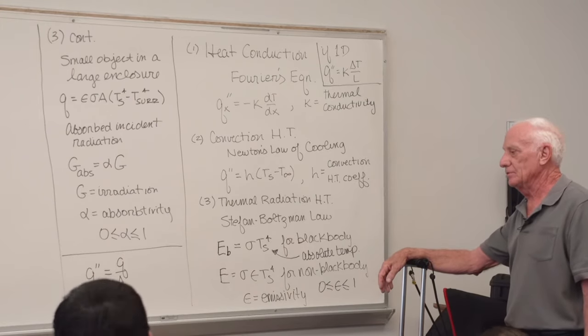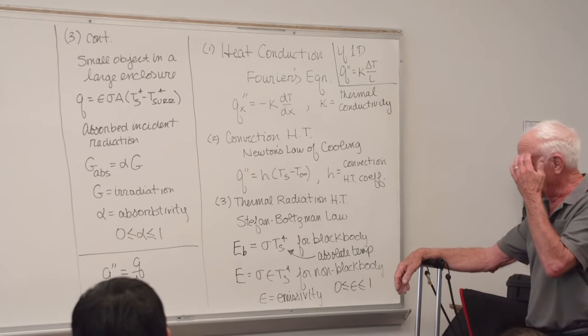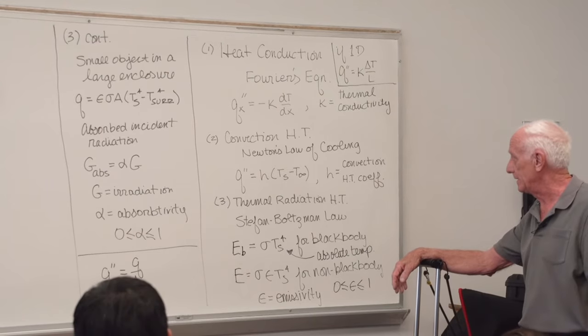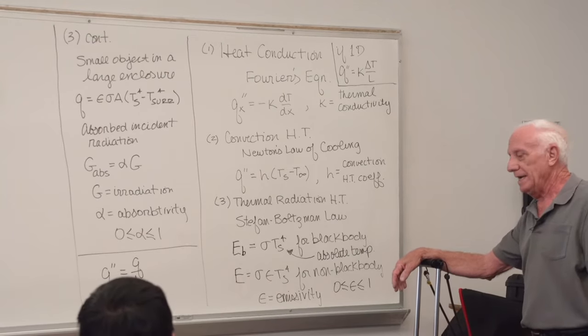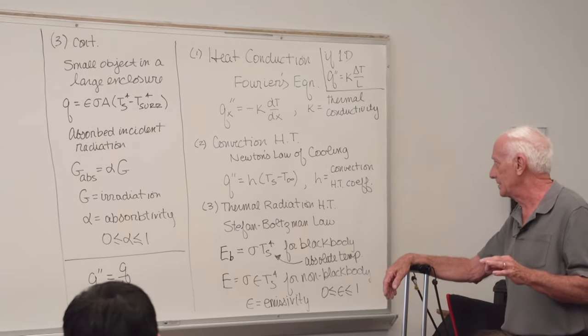Number two, convection heat transfer, called Newton's law of cooling. Q double prime again is equal to H T S minus T infinity. H is not a property, H depends on many things. It's called the convection heat transfer coefficient.